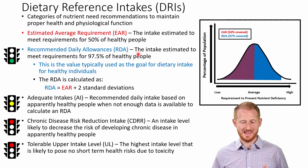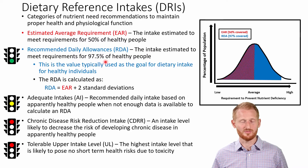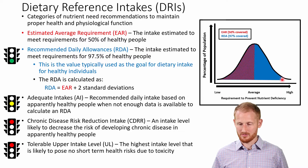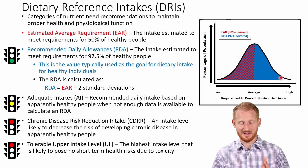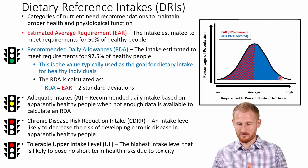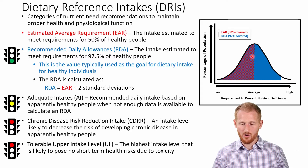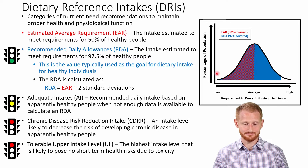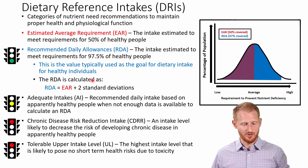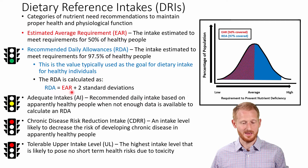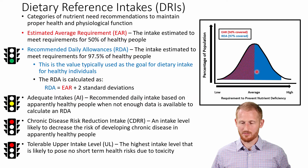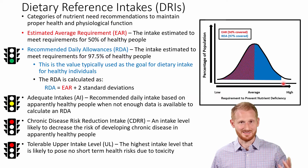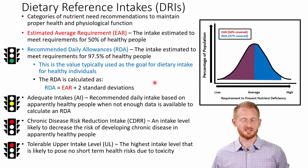The RDA is how much intake would be necessary to satisfy 97.5% of healthy people — so almost everybody. Right here at the end of this blue area where it goes white, that is 97.5% of people. So most people, if they follow the RDA, they would get what they need. Only about two and a half percent of people would not get what they need by following the RDA. The RDA is calculated as the EAR plus two standard deviations, giving you that 97.5% of the people who would be satisfied.